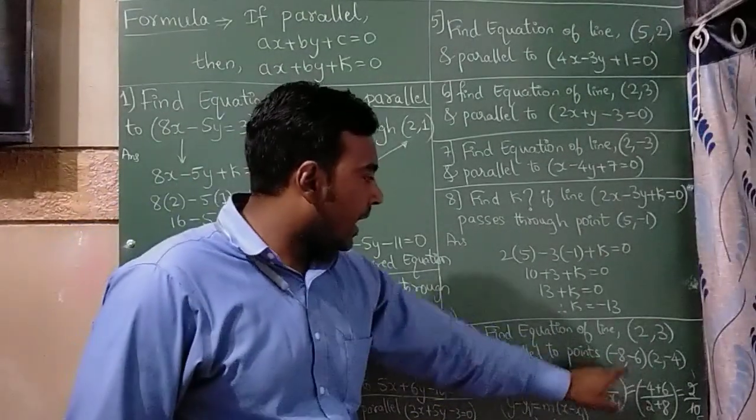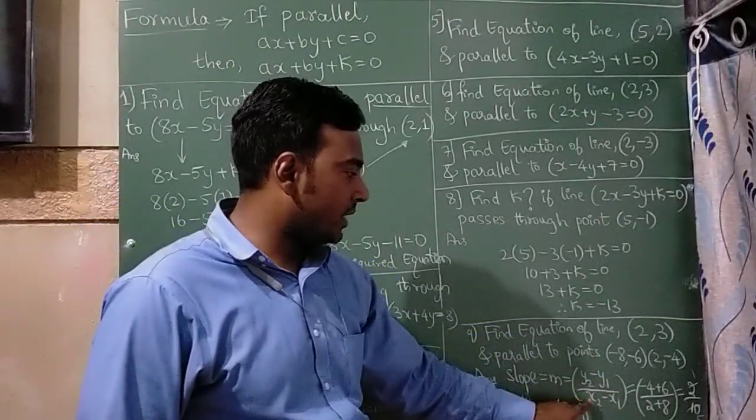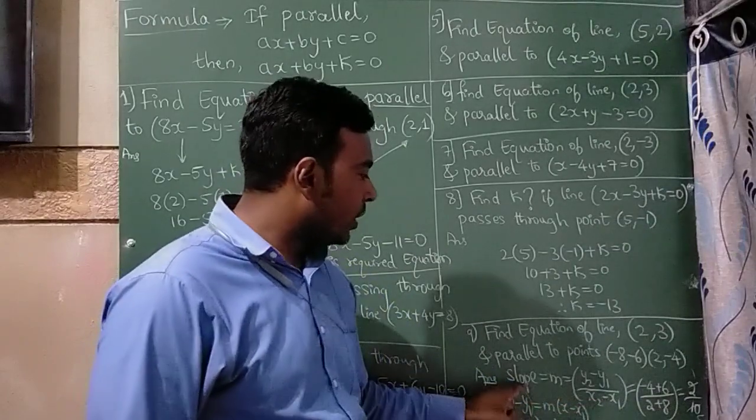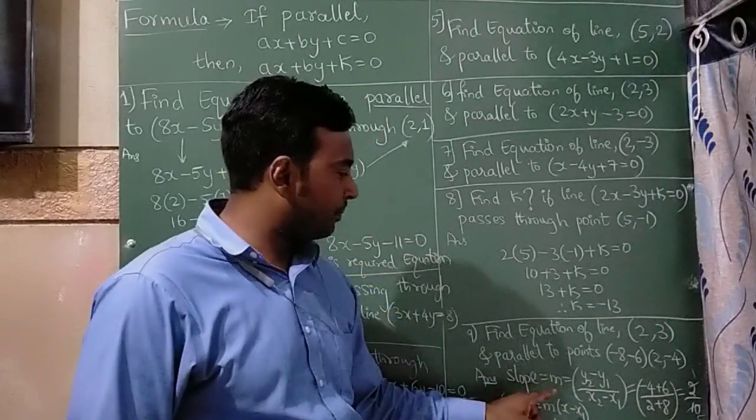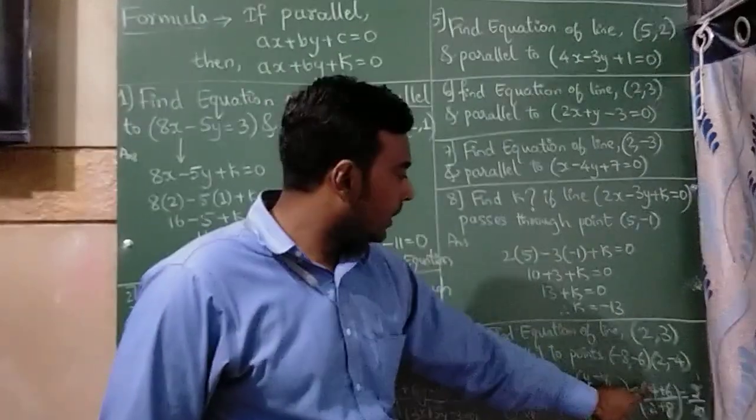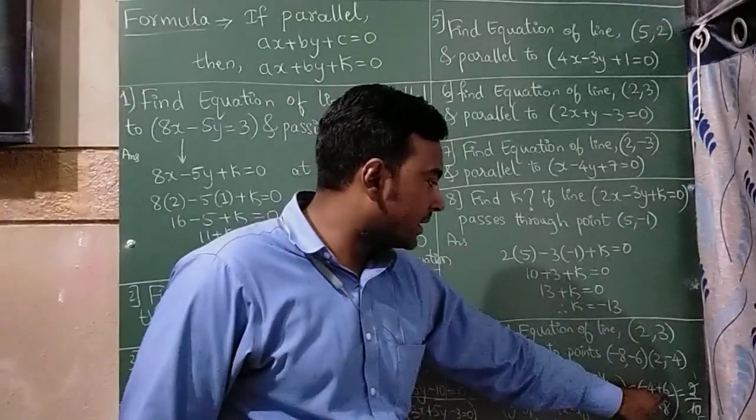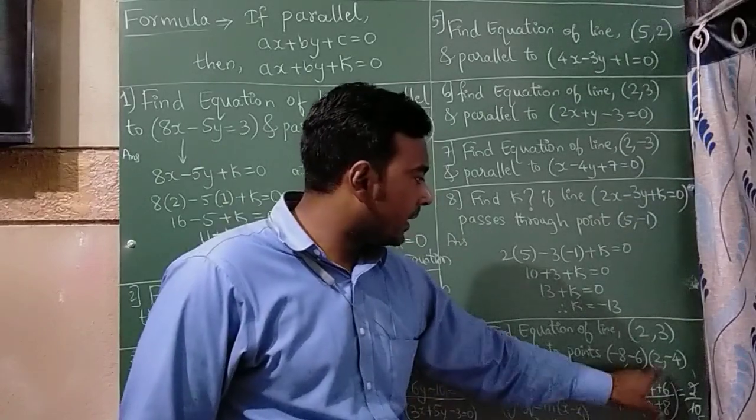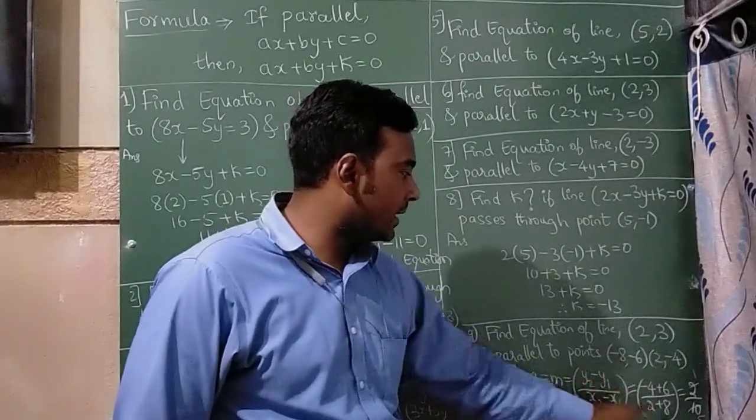So these two points are nothing but y2 minus y1 and x2 minus x1. We need to find the slope. So this is your y2. So y2 is minus 4. Minus into minus is plus.